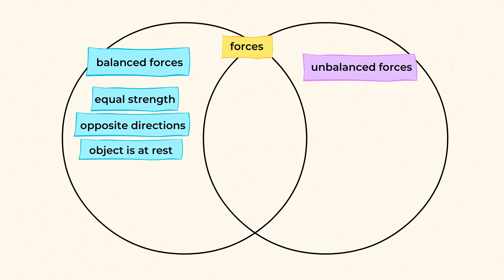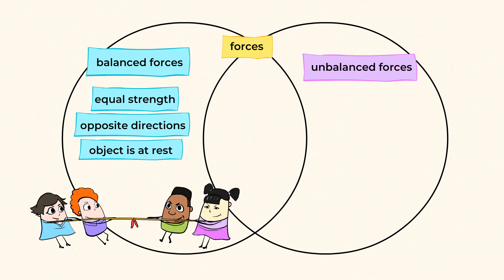Because of that, the object affected is at rest, or not moving. The easiest way to remember it? Think about the flag on the rope in a game of tug-of-war. It's not moving because equal forces are applied.